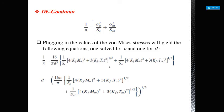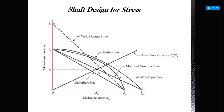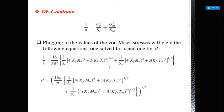Here you can find what is shown in the modified Goodman line. Plugging in the values of the von Mises stresses will yield the following equations — one solved for the safety factor and one solved for the diameter D.